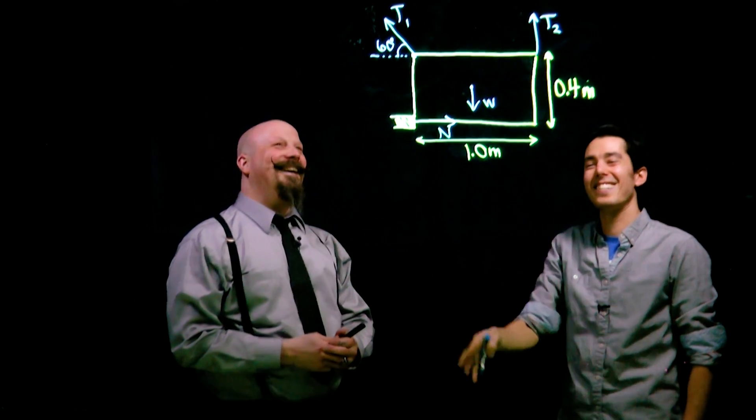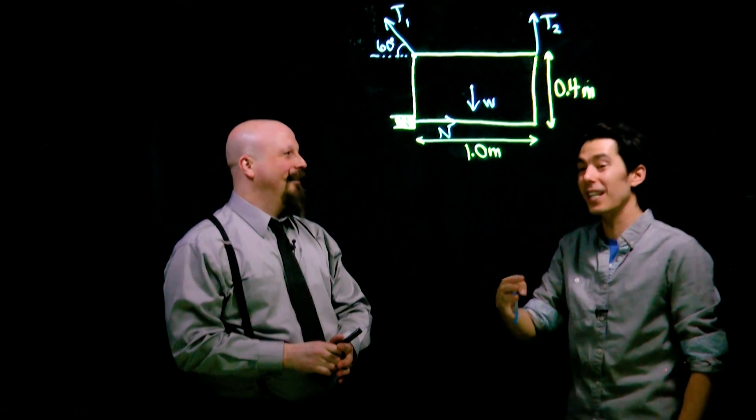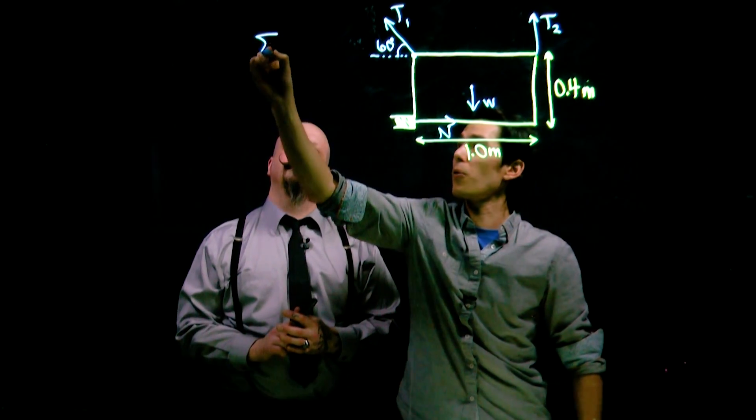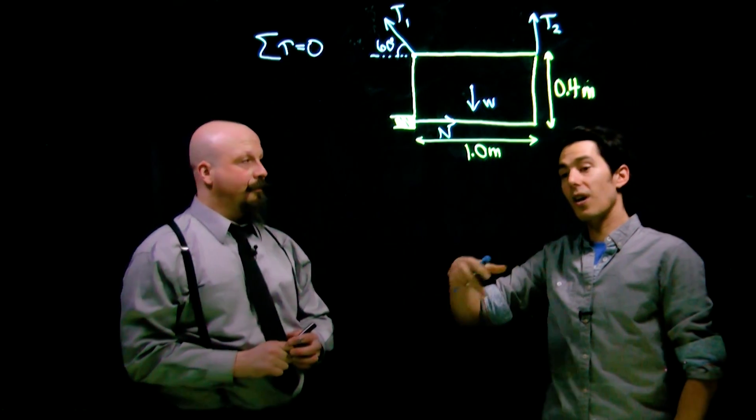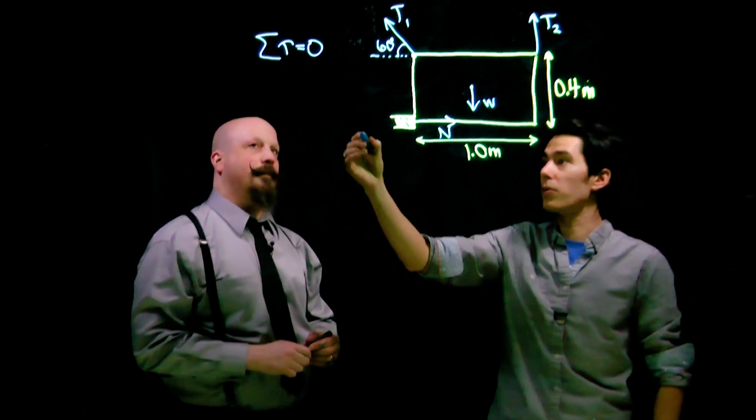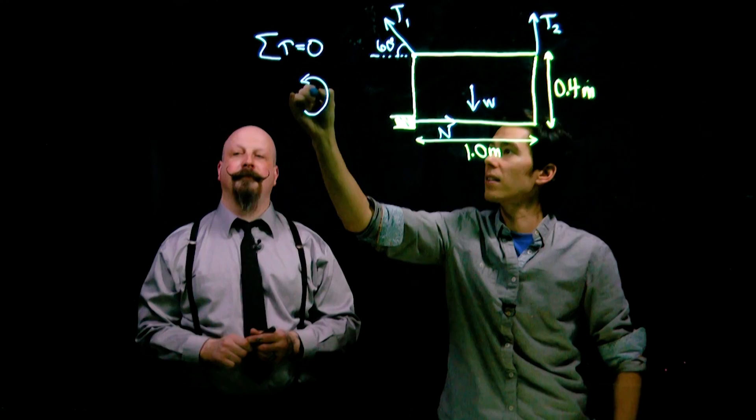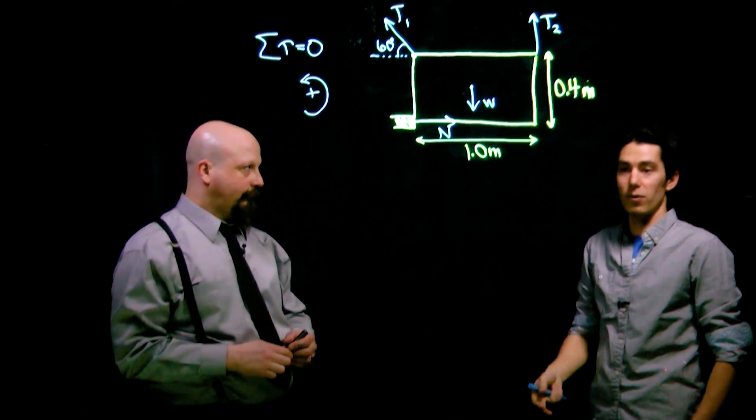It's not rotating anywhere so we can say we know that the sum of the torques is going to equal zero. We'll have some forces causing a clockwise, some a counterclockwise rotation and let's just say that anything that's going to try to rotate counterclockwise we'll call a positive torque.